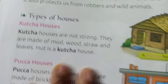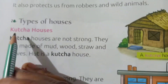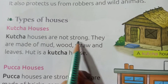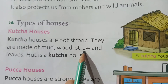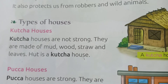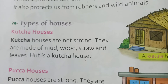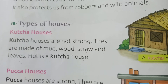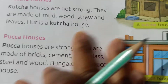Here are some types of houses. 1. Kaccha houses. Kaccha houses are not strong. They are made of mud, wood, straw and leaves. A hut is a kaccha house. These are made of straw and mud. Huts and houses in villages are kaccha houses.